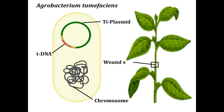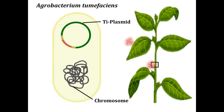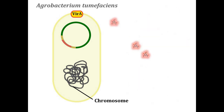The agrobacterium, which is present in soil, infects plants at some site of injury. This wound site releases a phenolic compound, acetosyringone, by which agrobacterium detects the signaling for infection at the injured site.